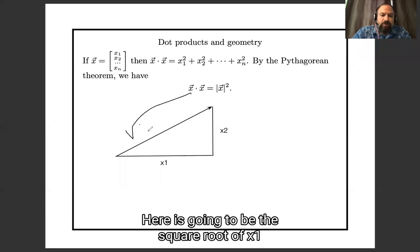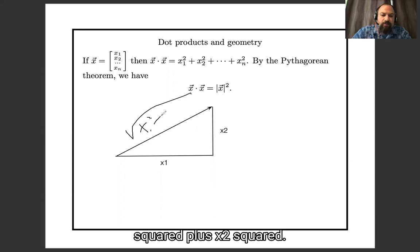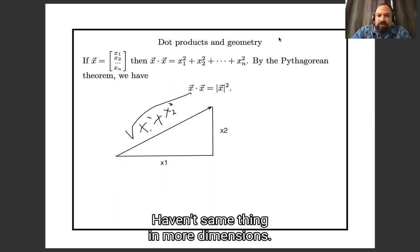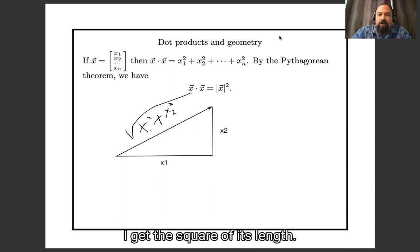then the Pythagorean theorem tells me that the length of the vector x is going to be the square root of x1 squared plus x2 squared. And that is exactly the square root of x dot with itself, and the same thing in more dimensions. So, when I dot a vector with itself, I get the square of its length.